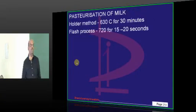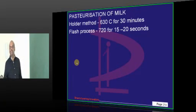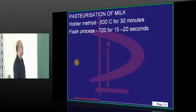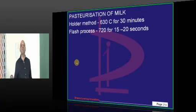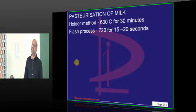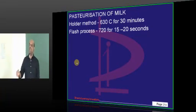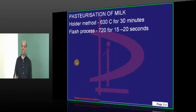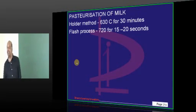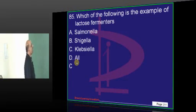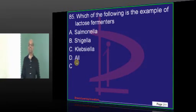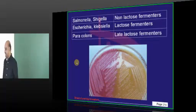In the flash pasteurization process, 72 degrees for 15 to 20 seconds is used. Holder method: 63 degrees for 30 minutes. Now coming to lactose fermenters and non-fermenters — you must know the difference, doctor.